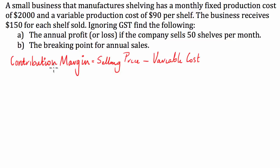Okay, so basically, the way we're going to use contribution margin for part A of this question is we're going to attack it like so. We're going to find the contribution margin of each shelf. So let's just work that out first. We have the contribution margin is equal to selling price, $150, minus the production cost $90. And this is going to be $60.